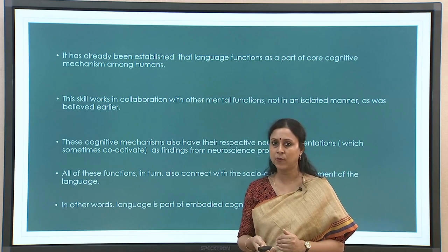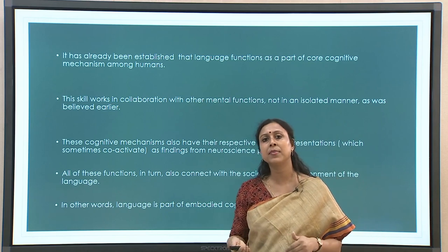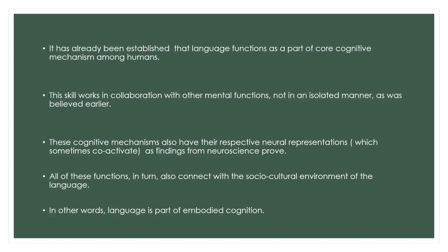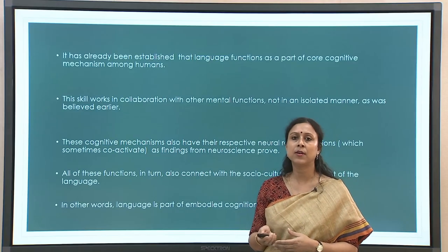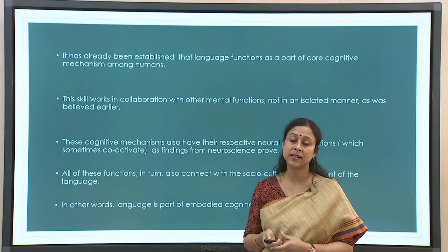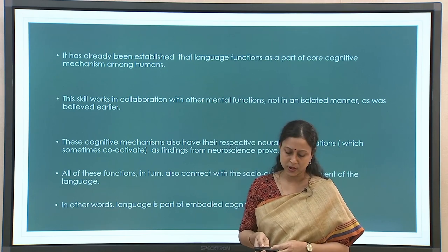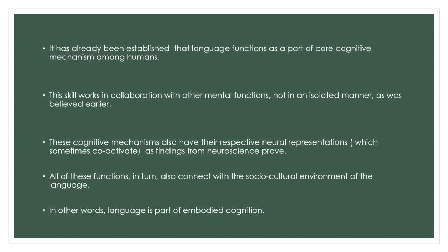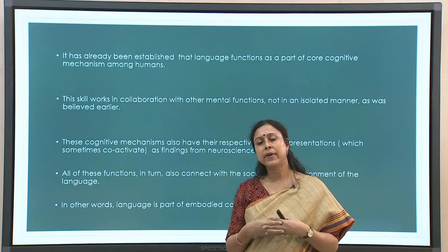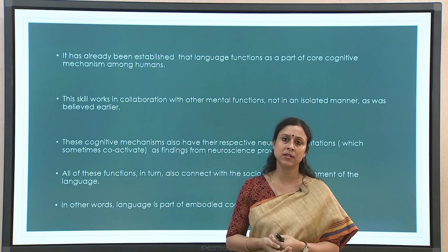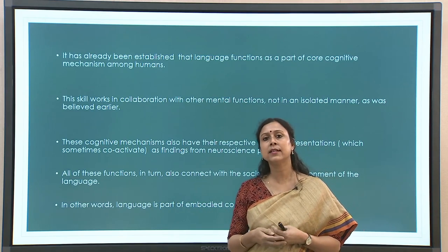Language does not function in a vacuum; it is not an isolated phenomenon. It is part of a general-purpose cognitive mechanism — that bit is already established. These cognitive mechanisms in turn have their respective neural representations in the brain, meaning each of these functions also has a specific neural signature. Sometimes they co-activate: language functions and certain attentional mechanism functions fire together, they work together. All of these functions are also connected with socio-cultural aspects, so the background within which language is set is also an important factor in this entire network.